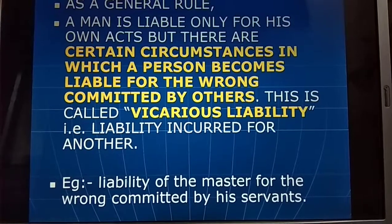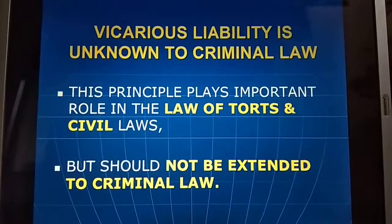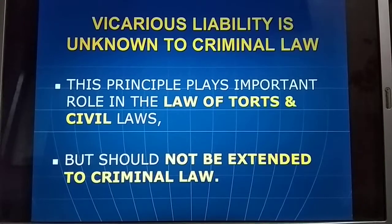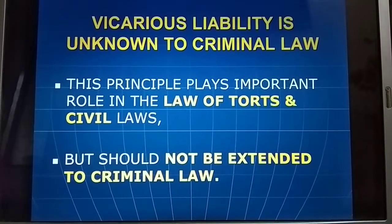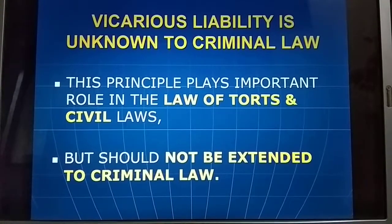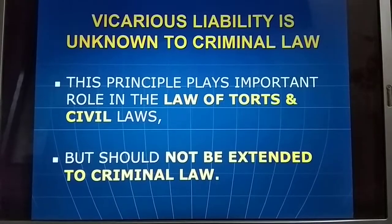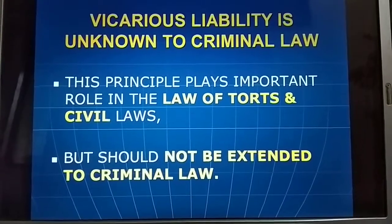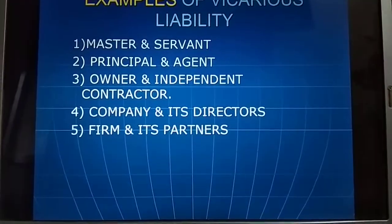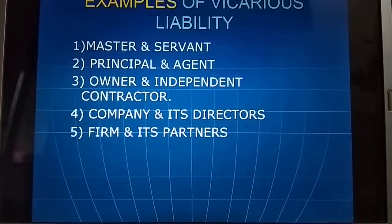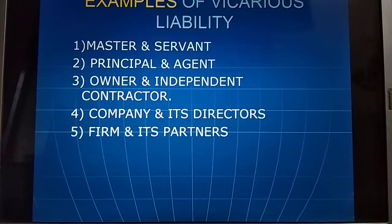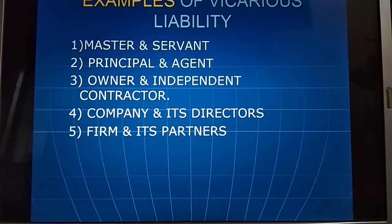Vicarious liability is unknown to criminal law. This principle plays an important role in the law of torts and civil law — vicarious liability applies to torts and civil law but should not be extended to criminal law. Examples include: master and servant relationship, principal and agent relationship, and owner and independent contractor relationship.